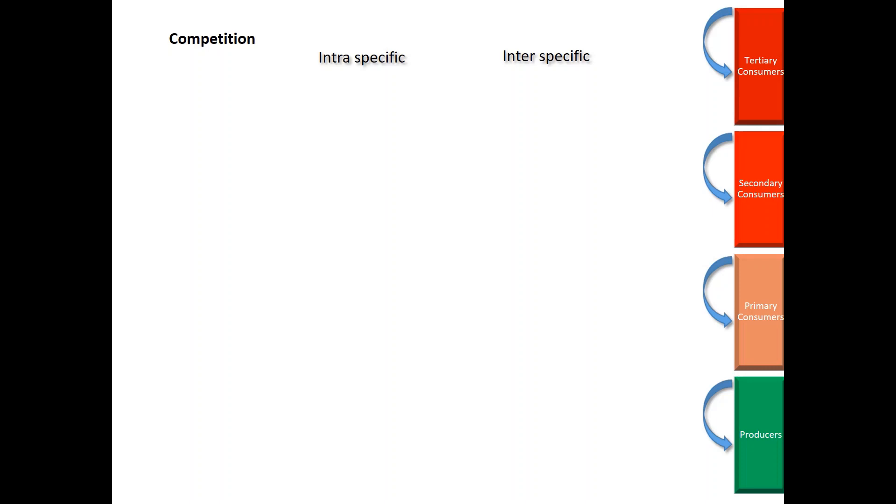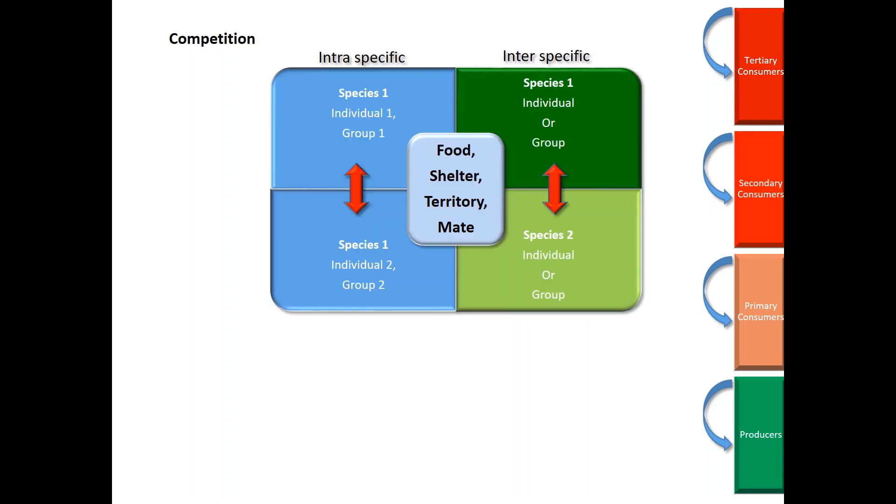Competition is a kind of interaction where one organism confronts other organisms for dominance. This interaction can occur within a species or between two different species. Competition can occur at the individual level or at the group level.